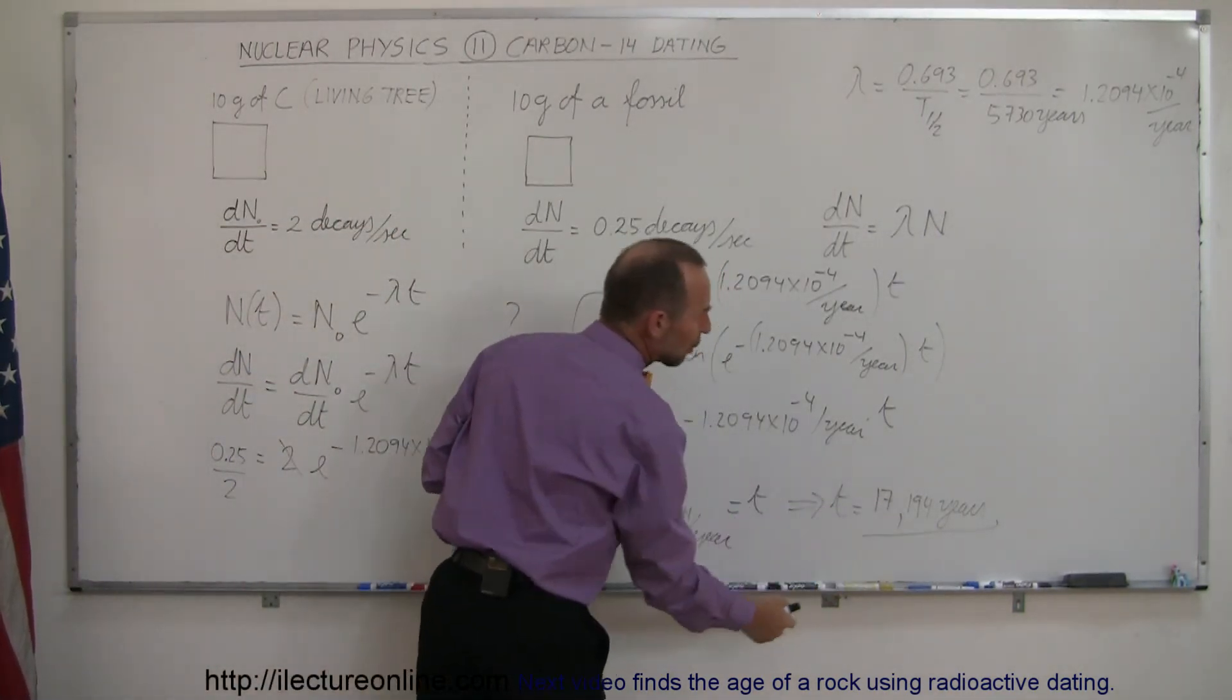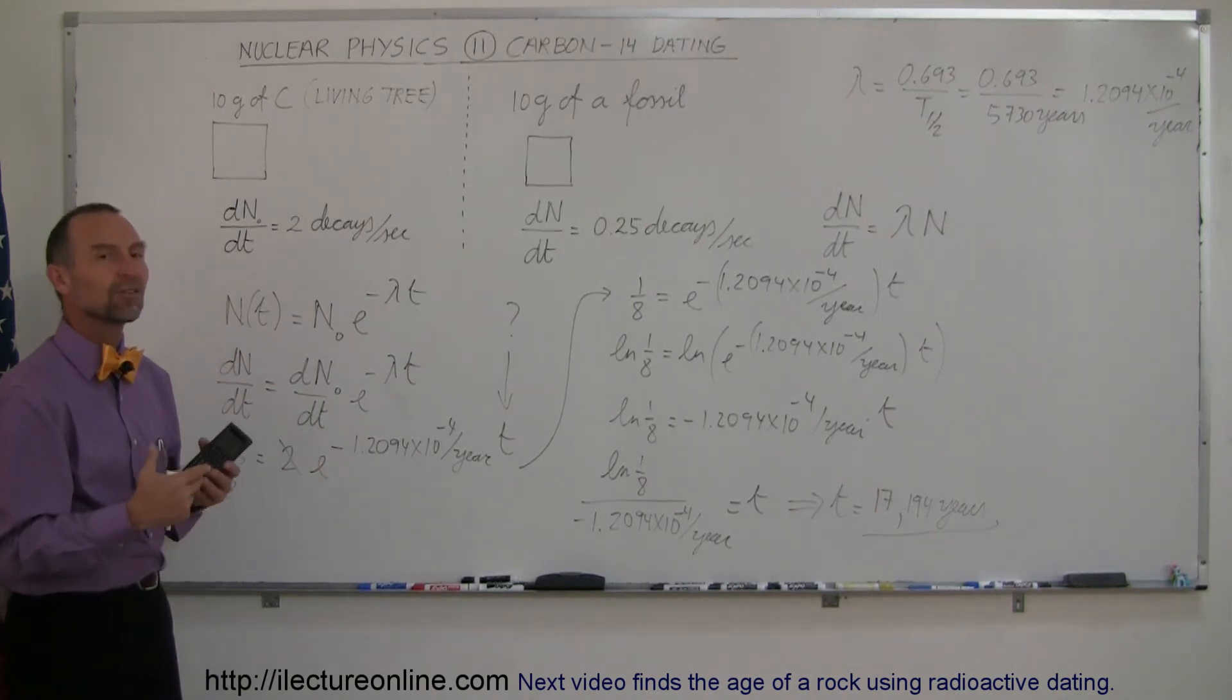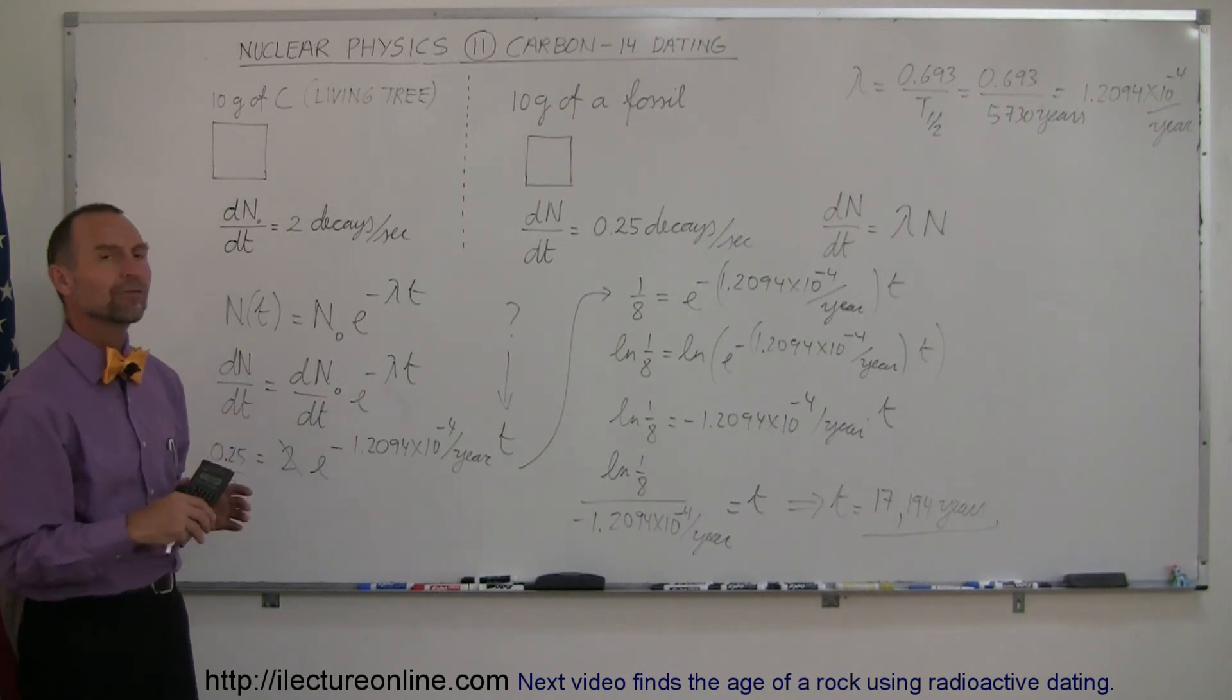So definitely we know we're in the ballpark, but it's probably plus or minus 50 years or plus or minus 100 years. We can't be all that accurate. But anyway, that is how we find the age of fossils. And this is a good method.